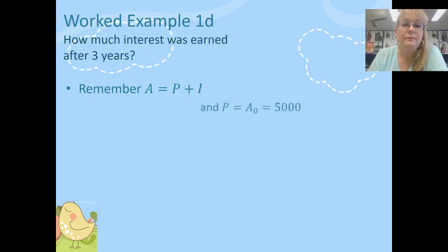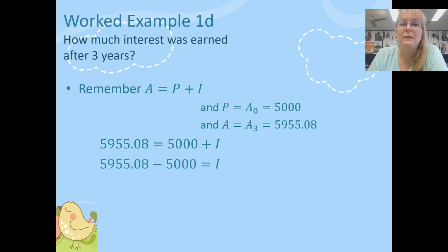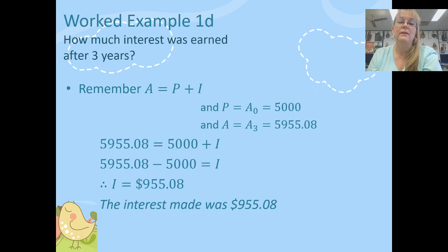Now this is a formula that you won't see on the QCAA's formula sheet so you do need to remember this one. Now remembering P, the principal, is also equal to A at time zero, $5,000. And we already worked out in our previous part that A was equal to A_3 and that's $5,955.08. So if we substitute that into the formula and do some manipulation to transpose and make I the subject, we'll find that I is $955.08. Now you'll notice in the question, I wasn't asked what is the value of I, I was asked how much interest was earned. So it's important that I write a statement at the end of this. The interest made was $955.08.